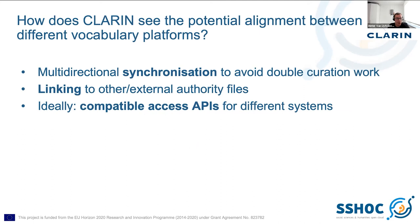How do we see potential alignment between different vocabulary platforms? I think there should be a place for multi-directional synchronization to avoid double curation work. There should be possibilities for linking to external authority files rather than having to redefine something within your system. And ideally, compatible access APIs for different systems — I think that would definitely help solve a lot of the potential issues.